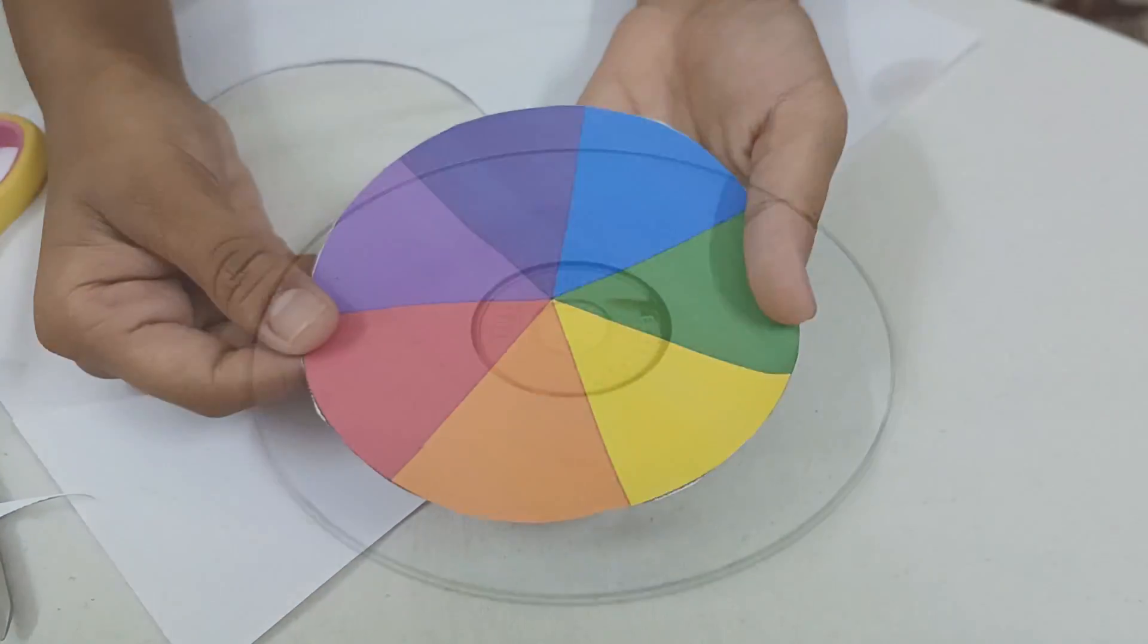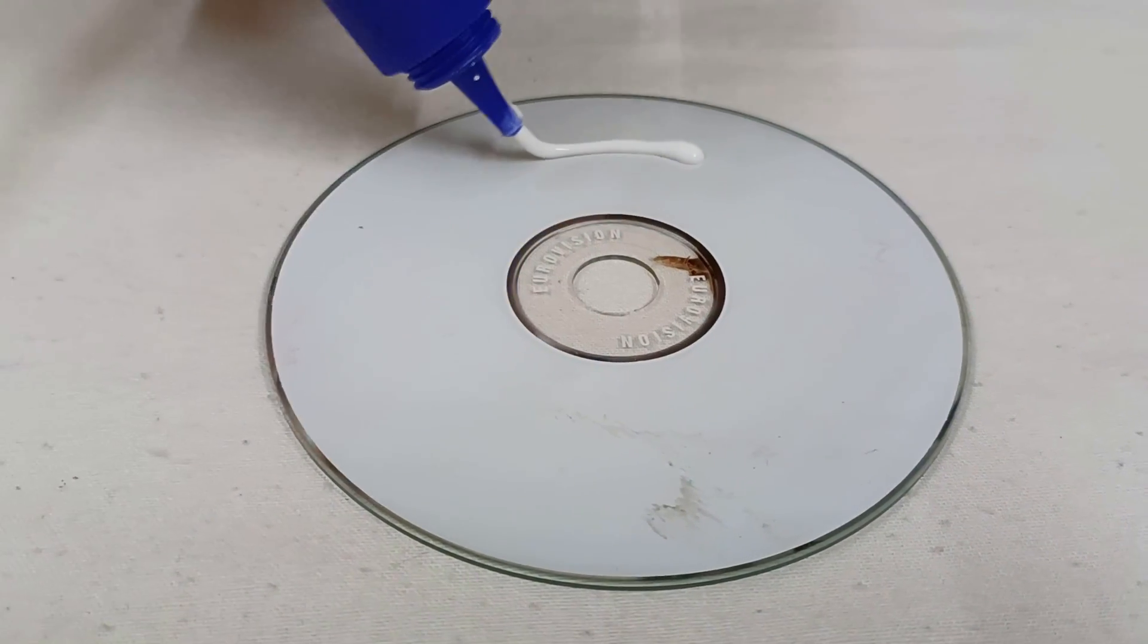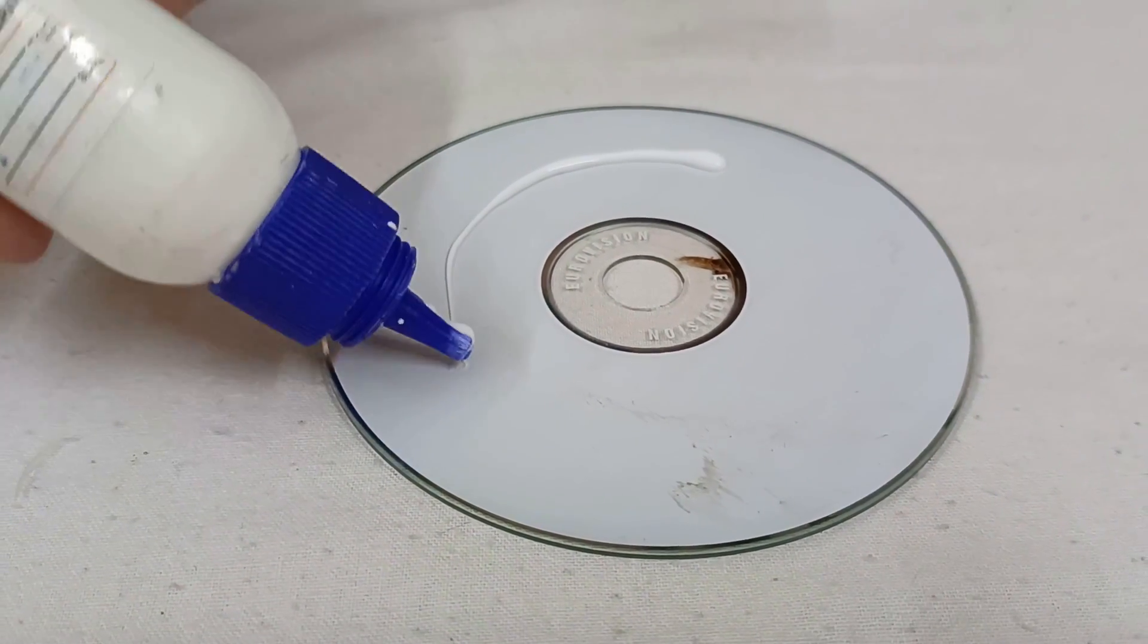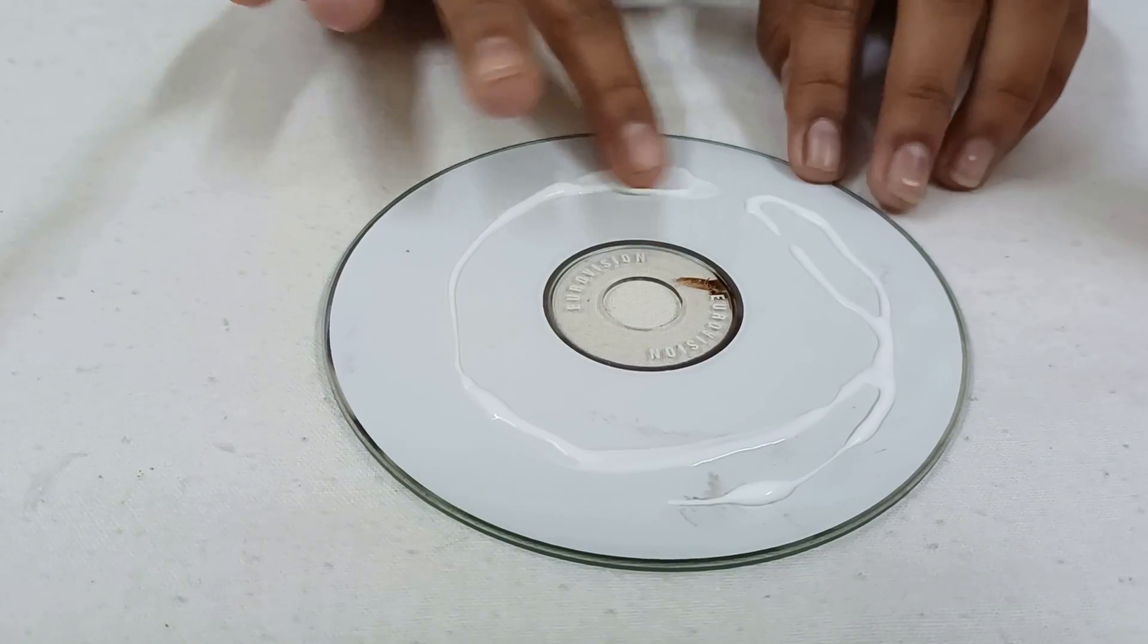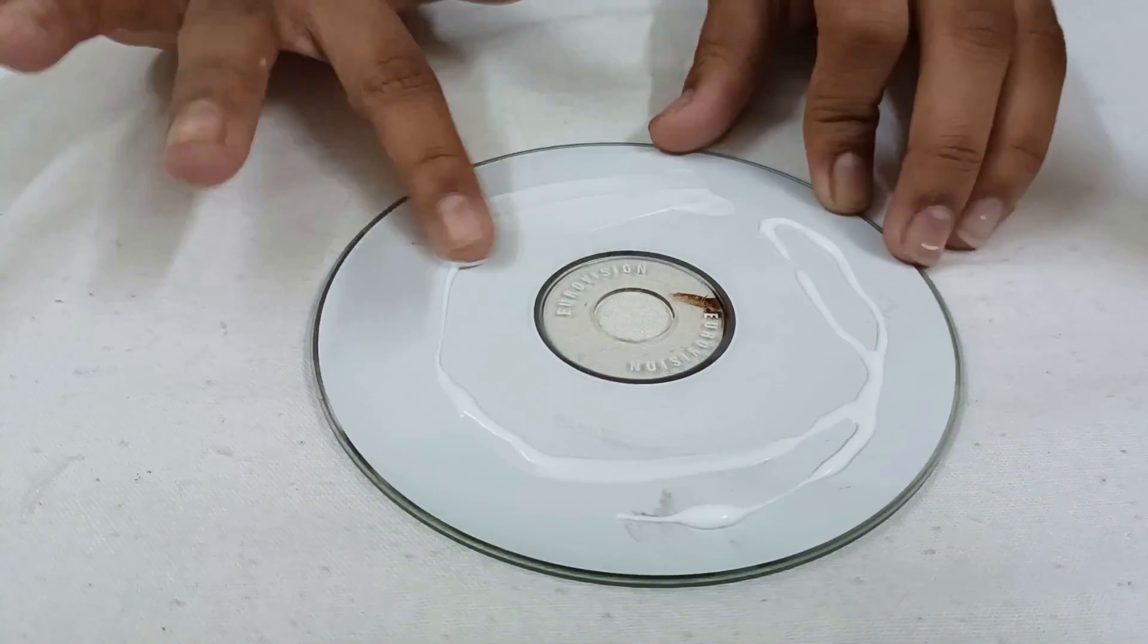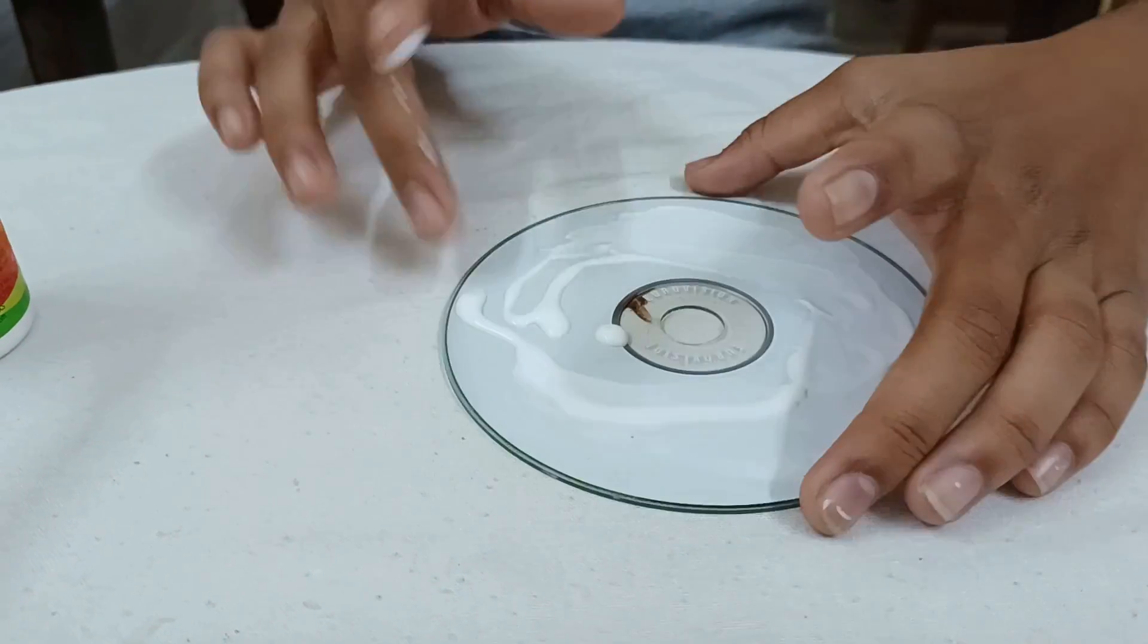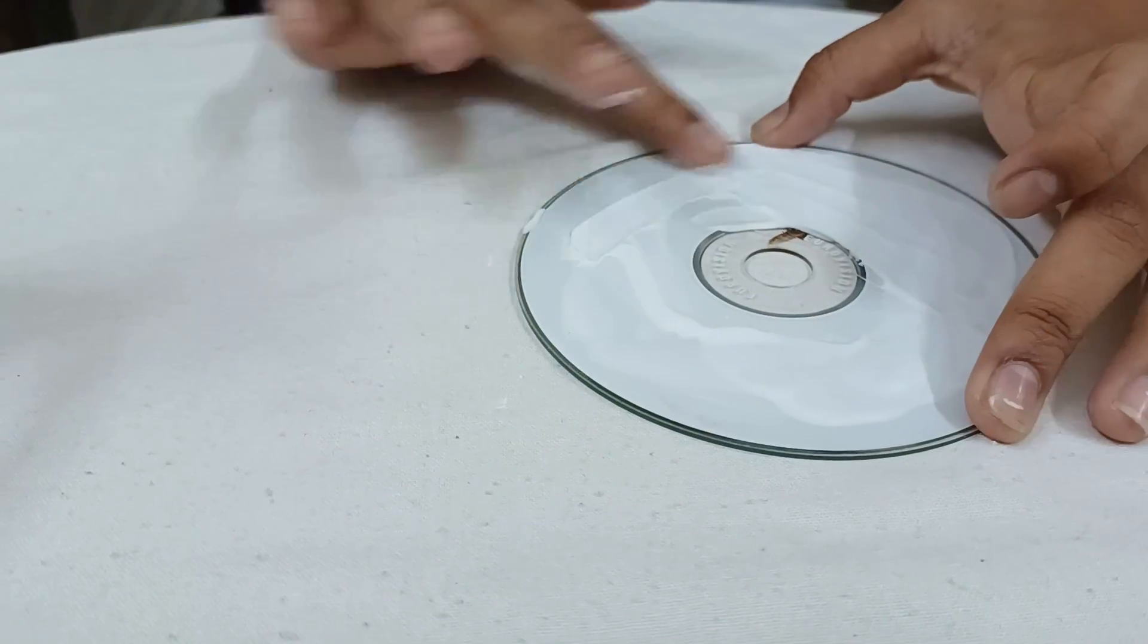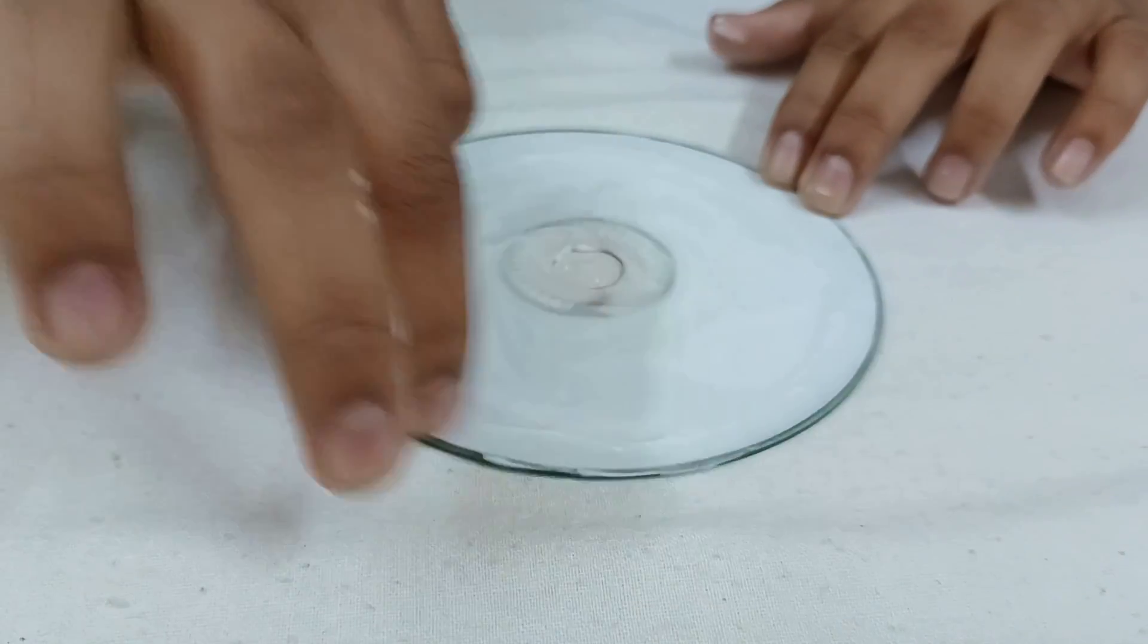Now apply some glue on the CD. Make a thin layer. Now spread it with your finger. Spread it like this. Apply on the edges.